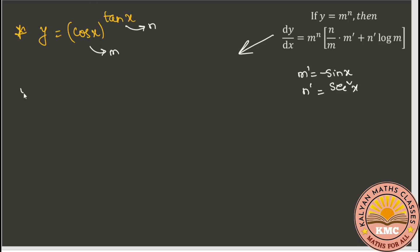So dy by dx equals m to the power n, which is cos x to the power tan x, times n by m, so tan x by cos x, times m dash which is minus sin x, plus n dash which is secant squared x, times log m which is log cos x.